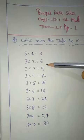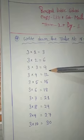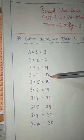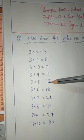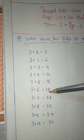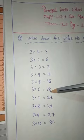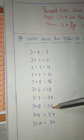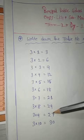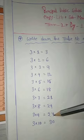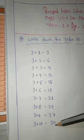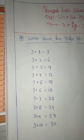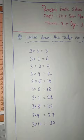Three four's are twelve, three five's are fifteen, three six's are eighteen, three seven's are twenty-one, three eight's are twenty-four, three nine's are twenty-seven, and three ten's are thirty. Okay students, that's enough for today.